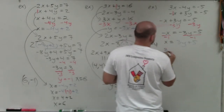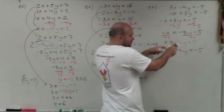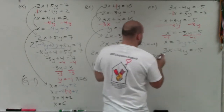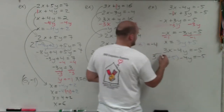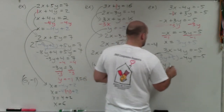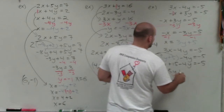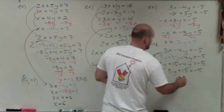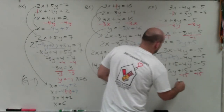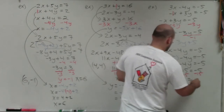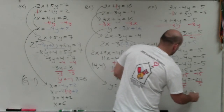Now I take the other equation, 3x minus 4y equals negative 5, and plug in 3y plus 5 for x. It becomes 3 times the quantity 3y plus 5 minus 4y equals negative 5. Applying the distributive property: 9y plus 15 minus 4y equals negative 5. Combining like terms: 5y plus 15 equals negative 5. Subtracting 15: 5y equals negative 20. Dividing by 5: y equals negative 4.